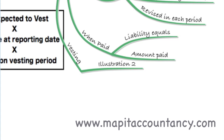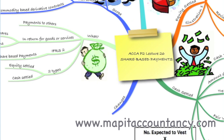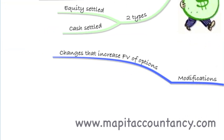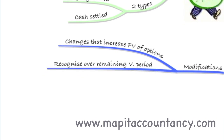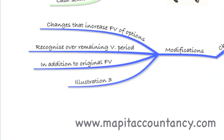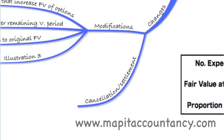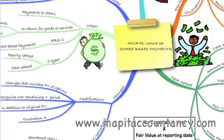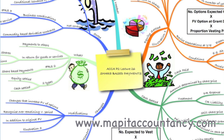We looked at cash settled in illustration two. The last thing we talked about were modifications. If there are modifications to share options — for example, the company sees that the share option value has changed and makes modifications to the payment plan — if those modifications increase the fair value of the options, you recognise that change over the remaining vesting period in addition to the original fair value. So you do your original calculation and add in any extra fair value brought about by the modification, as covered in illustration three. Lastly, if there's a cancellation or a settlement, then we shorten the vesting period. That is our lecture 26 on share-based payments IFRS 2.